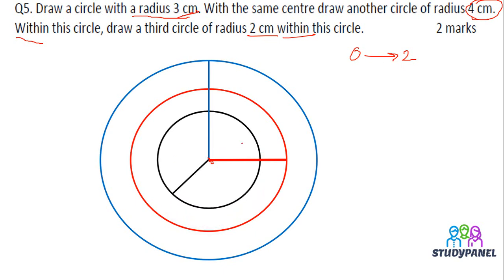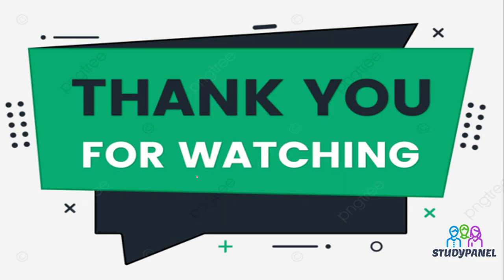Within this circle, we will do measurement and then we will make a small circle. And this is the radius: this is our 3 centimeter, this is our 4 centimeter, and this is our 2 centimeter.